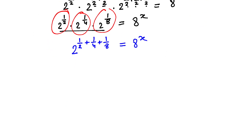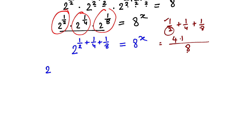Since 2 is the base, we can add the exponents. For the fraction addition 1 by 2 plus 1 by 4 plus 1 by 8, we take the LCM of the denominators, which is 8. Then: 8 ÷ 2 × 1 = 4, 8 ÷ 4 × 1 = 2, and 8 ÷ 8 × 1 = 1. So 4 + 2 + 1 = 7, giving us 7 by 8. The power on 2 is therefore 2 raised to the power 7 by 8.